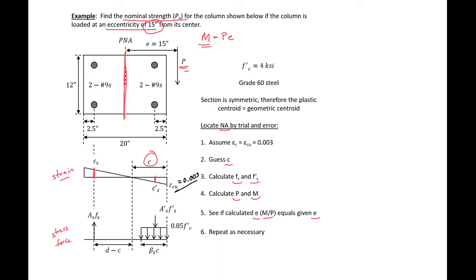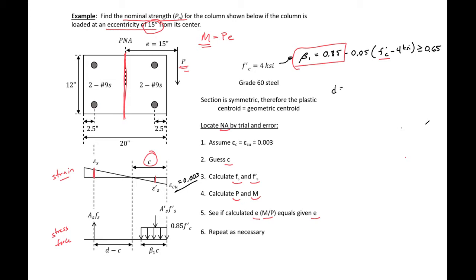Some of the properties we'll need for this problem are our beta_1. Beta_1 equals 0.85 minus 0.05 times (f'c minus 4) in ksi, and must be greater than 0.65. For 4 ksi, beta_1 is just equal to 0.85. We can also find d equal to our overall height of 20 inches minus 2.5 inches, giving us d = 17.5 inches, and d' is given as 2.5 inches.